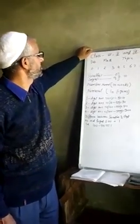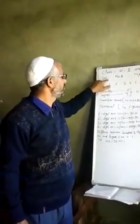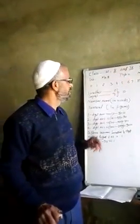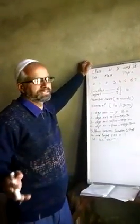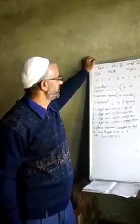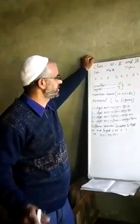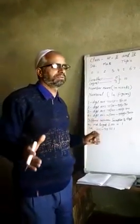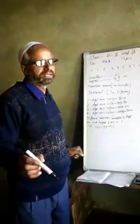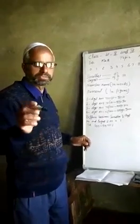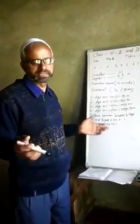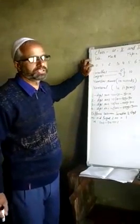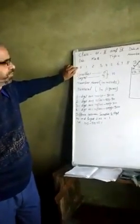The number is 1st, 2nd and 3rd. They are counting. It represents a number of 1st.